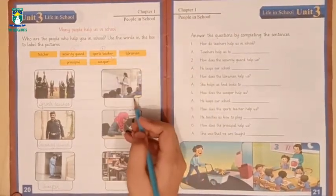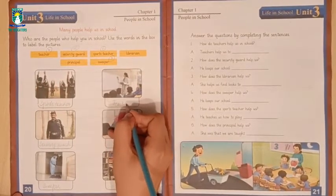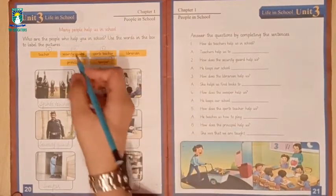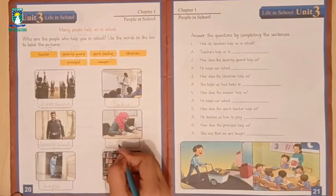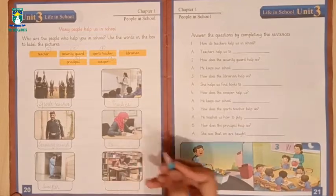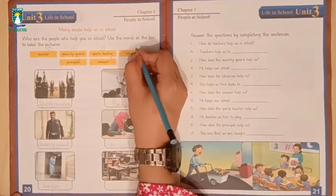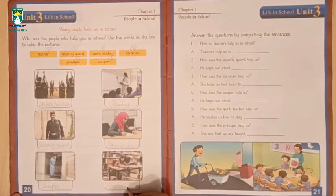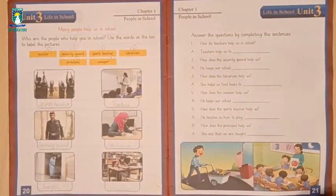Next one is teacher. Teacher teaches us new things. Next is principal. Principal looks after the school matters. Next is the librarian. What does the librarian do? The librarian helps us to find out the books. Okay, then we move to the next page, page 21.